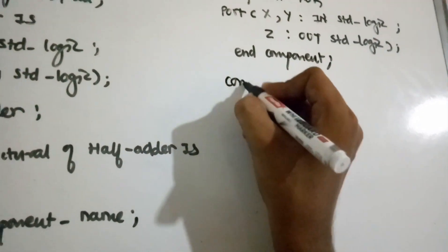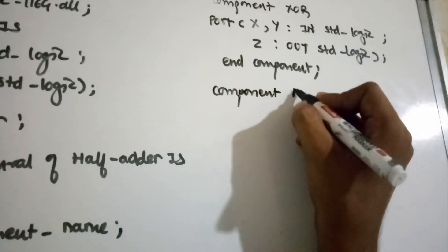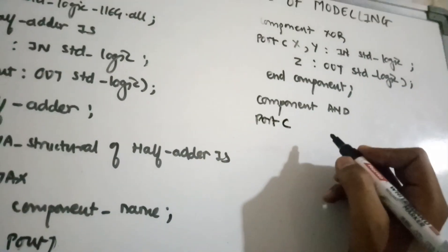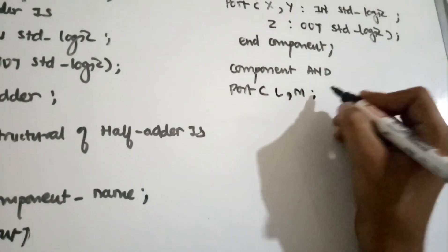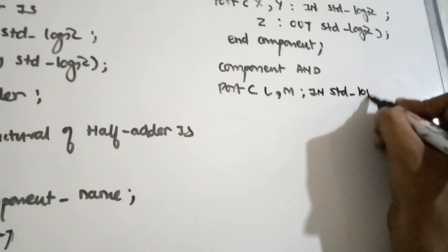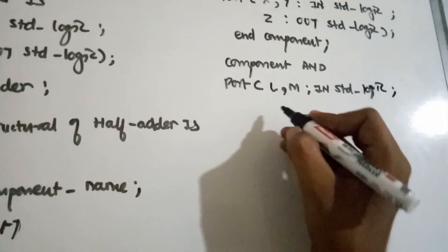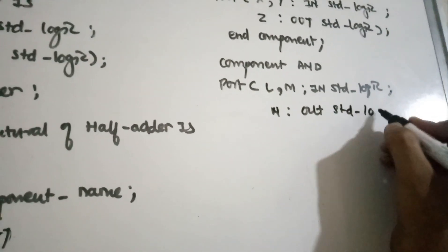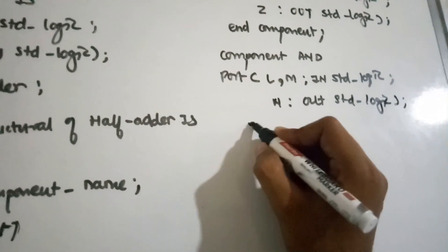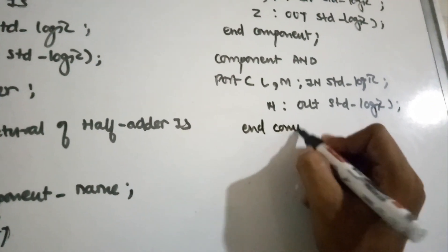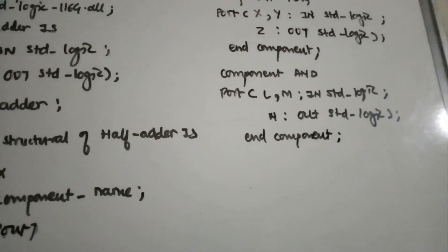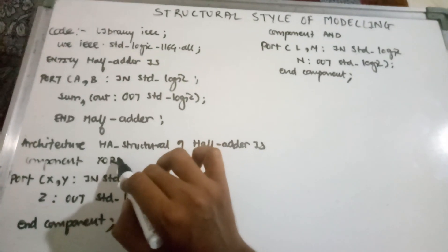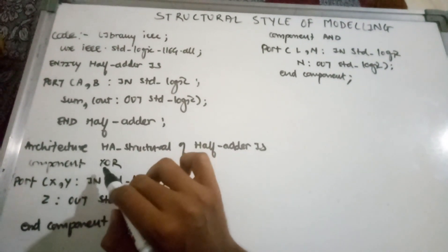The second component declaration is for the AND gate: component AND, port (L, M : in std_logic; N : out std_logic), end component. So L and M are inputs and N is the output of the AND component.